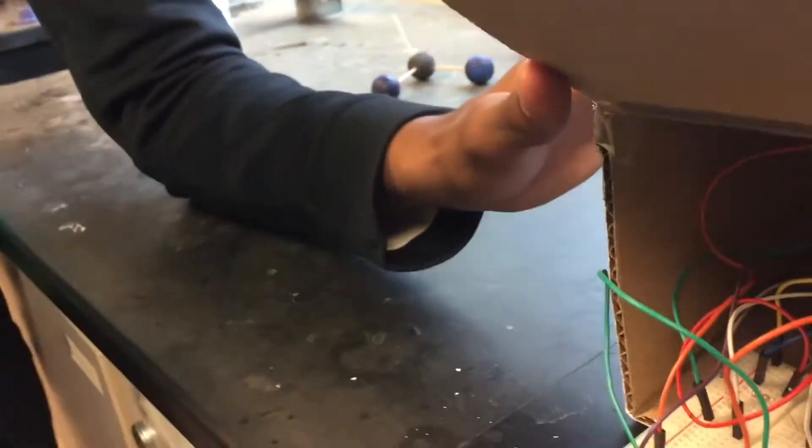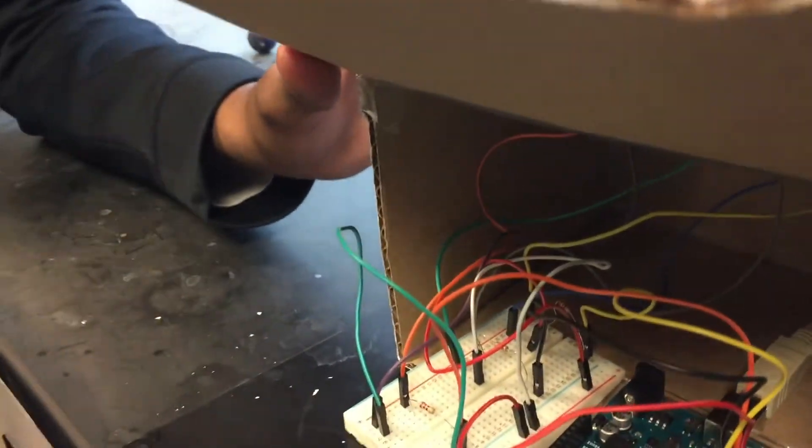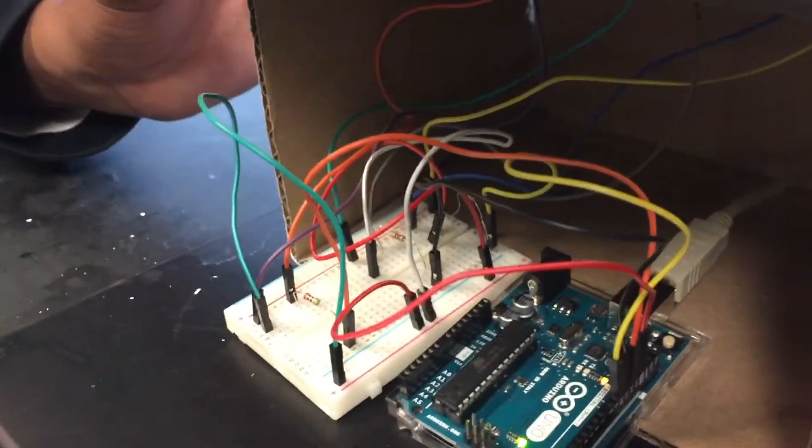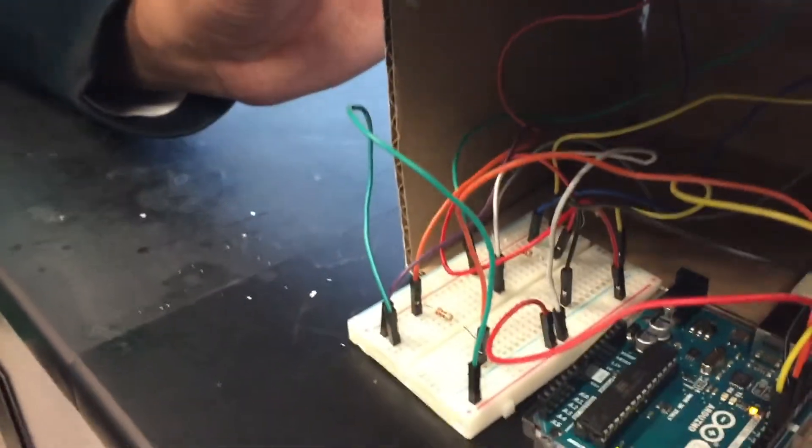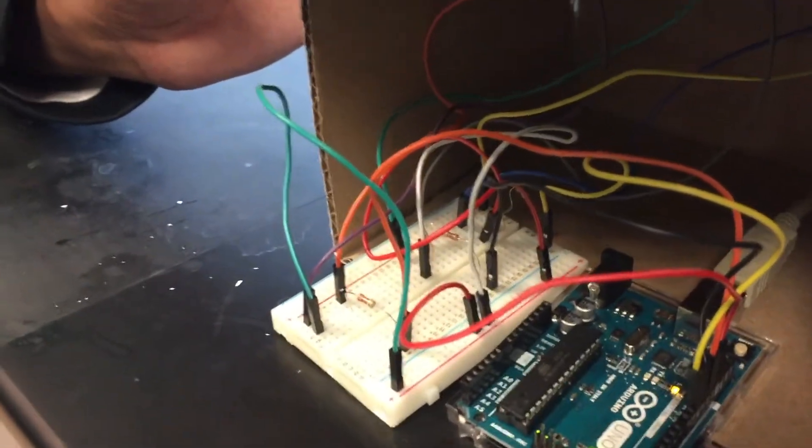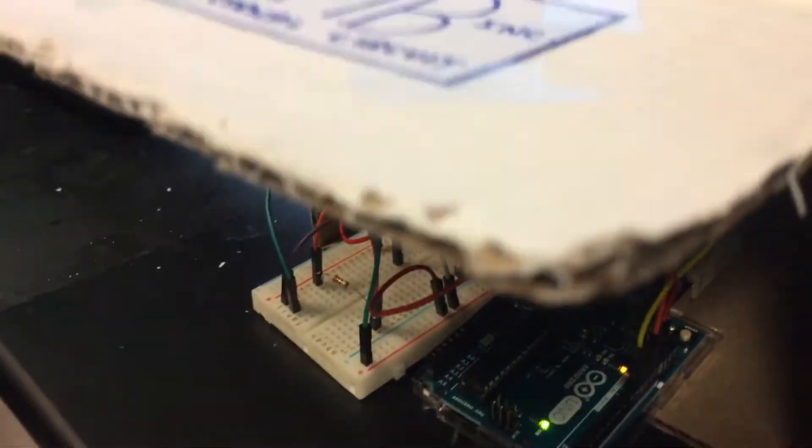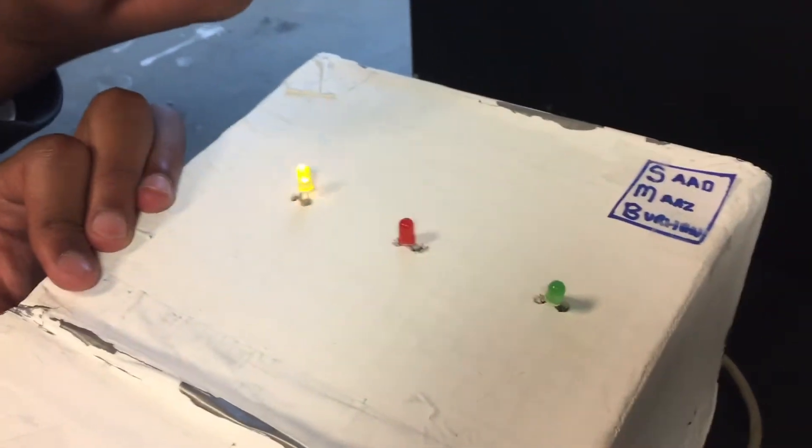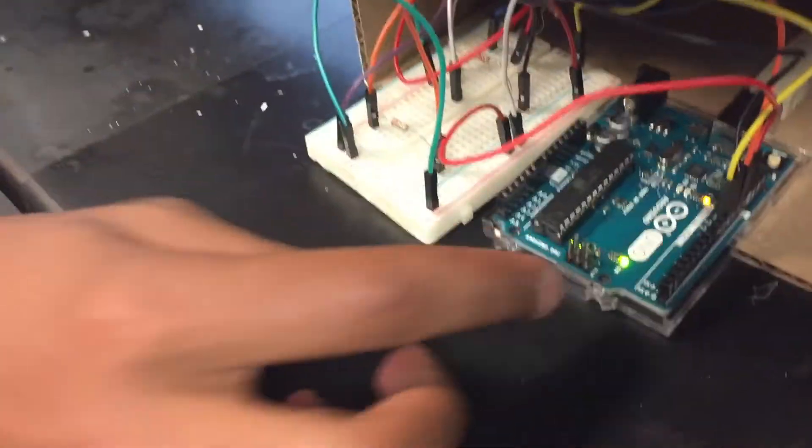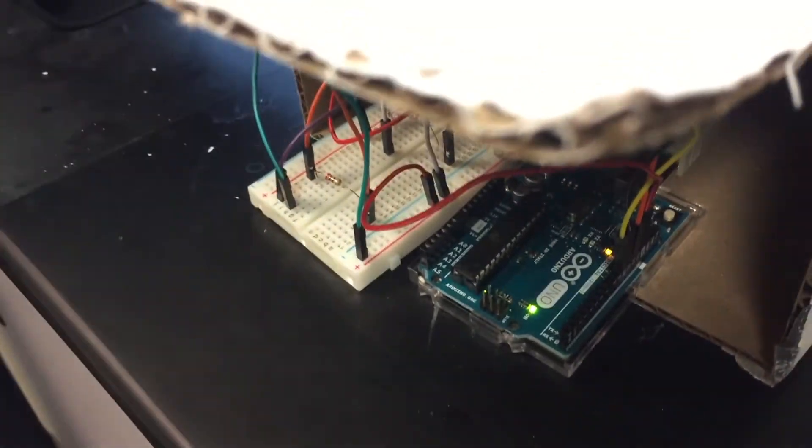On the computer you download the software and write the code. There's an upload button, so you just attach the Arduino to your computer with the USB cable and upload it. Right now we don't have a computer plugged in, but since the software is already uploaded into the Arduino, we can just plug it in and the circuits will light up.